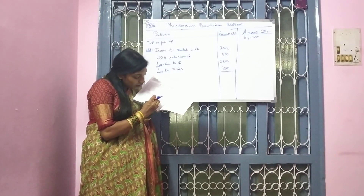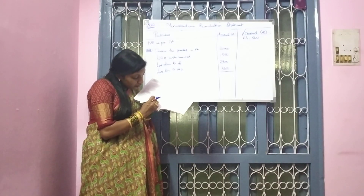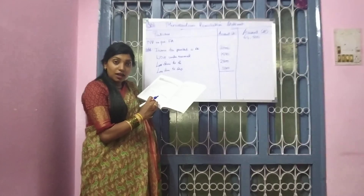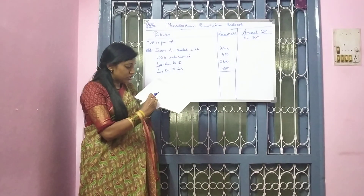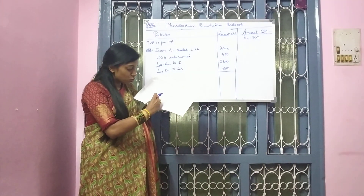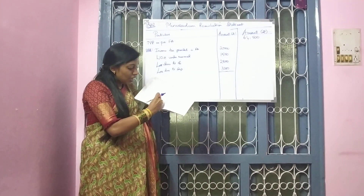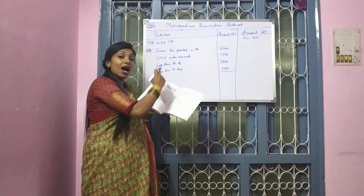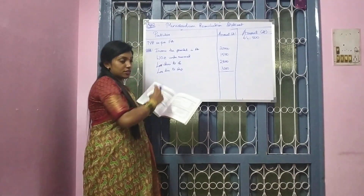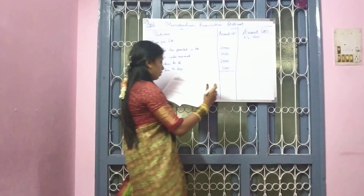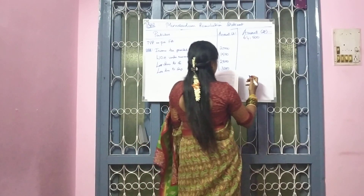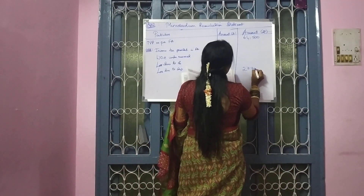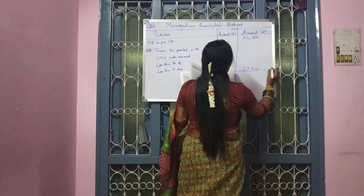First, third, then sixth and the last eighth. So these are the transactions which are showing less, and all the less items I have added in your second step. The amount will be 27,700 and the total...